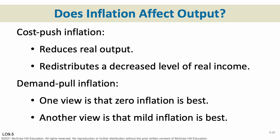Does inflation affect output? Cost push inflation absolutely affects output — it causes prices to go up due to inputs becoming more expensive, which reduces your output. Reduction of output is what causes a recession and a drop in GDP. Demand pull inflation has different views: one is that zero inflation is best, another is the view currently taken by our Federal Reserve that mild inflation around 2% is best. We'll go into all of that in later chapters.